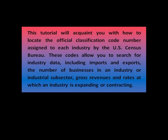This tutorial will acquaint you with how to locate the official classification code number assigned to each industry by the U.S. Census Bureau. These codes allow you to search for industry data, including imports and exports, the number of businesses in an industry or industrial subsector, gross revenues, and rates at which an industry is expanding or contracting.